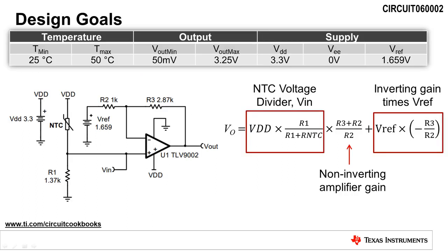The equation for VO is the transfer function of the circuit. The first term, VDD times R1 divided by R1 plus RNTC, is the input voltage, VIN.